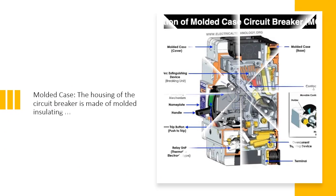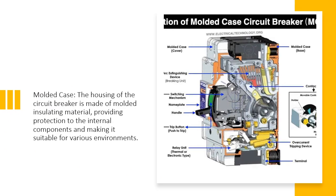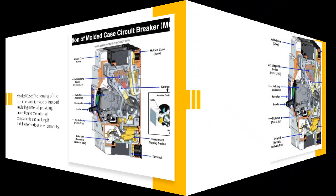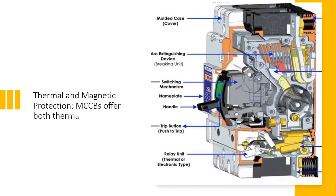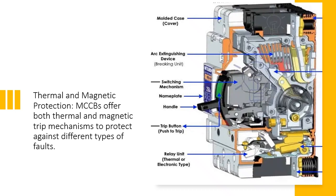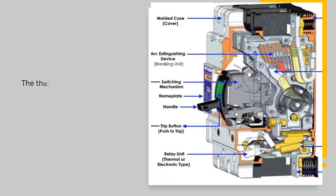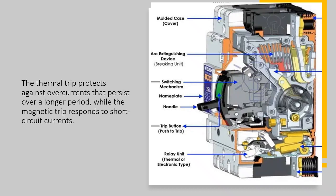Key features of MCCBs include: 1. Molded Case — the housing of the circuit breaker is made of molded insulating material, providing protection to the internal components and making it suitable for various environments. 2. Thermal and Magnetic Protection — MCCBs offer both thermal and magnetic trip mechanisms. The thermal trip protects against overcurrents that persist over a longer period, while the magnetic trip responds to short circuit currents.